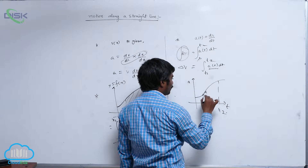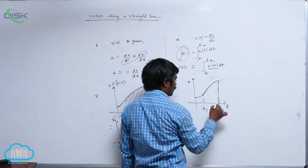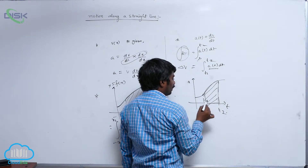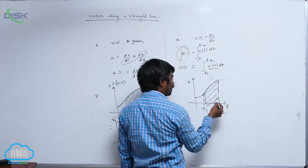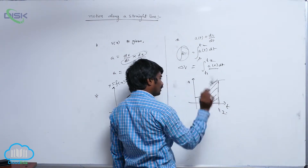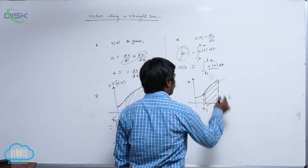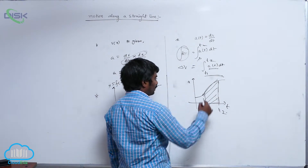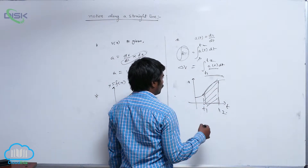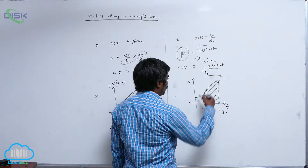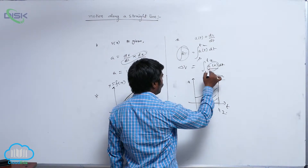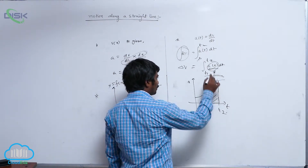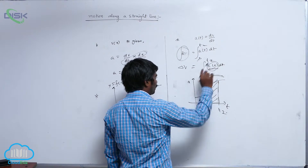By doing this integration, what you get is the area under the curve. If it is a regular shape, you can directly calculate the area without doing integration. If it is an irregular or arbitrary shape, you need to know the a of t function, then substitute it mathematically to calculate the result.